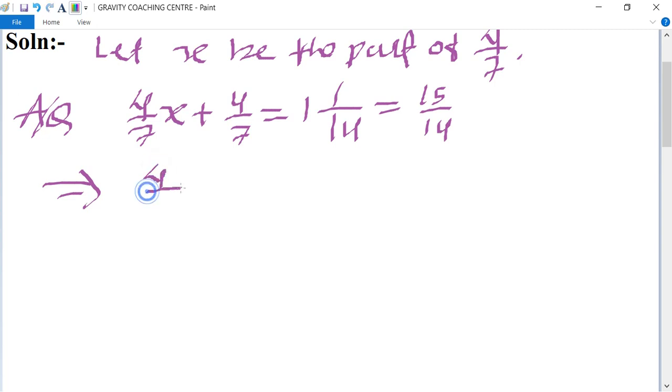This implies that 4/7 x equals 15/14 minus 4/7. The LCM is 14, and 15 minus 8.